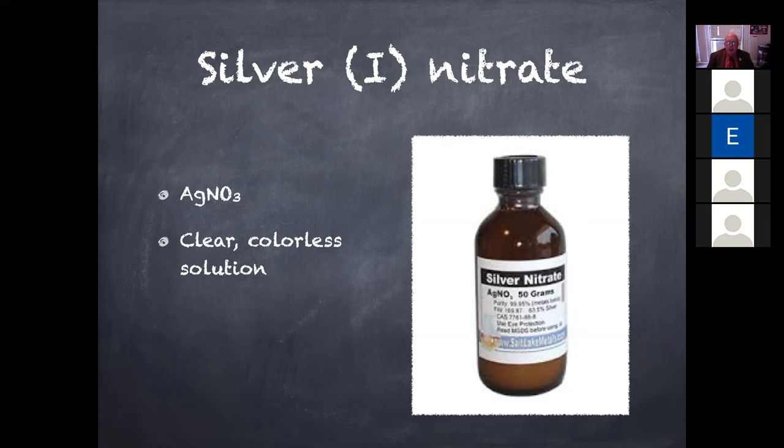This is an amber bottle. We always use that term, amber. It's brown, but we say it's amber. Because this stuff is photosensitive. It's like hydrogen peroxide. When you buy hydrogen peroxide at the drugstore, it comes in a brown opaque bottle, not like rubbing alcohol, which is just a clear translucent bottle. So if I were passing around the bottle of silver nitrate, you would open it and you'd look in and you'd say, Mr. Morgan, you're lying to me.